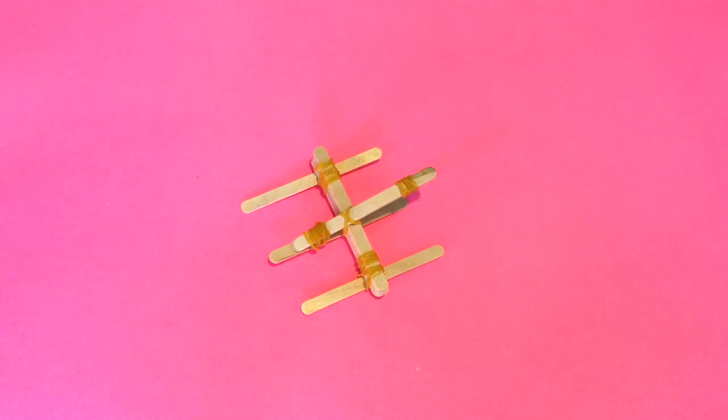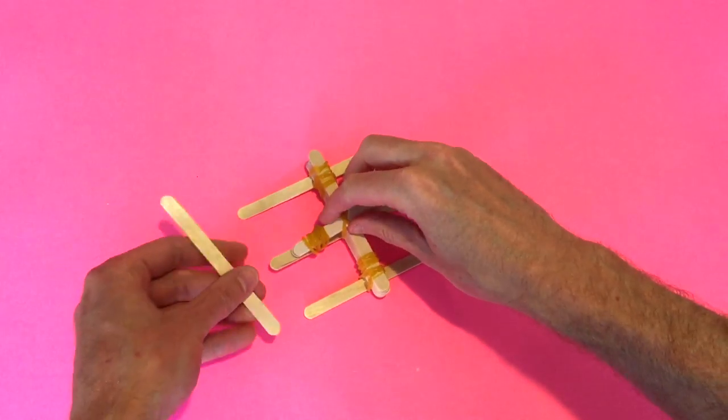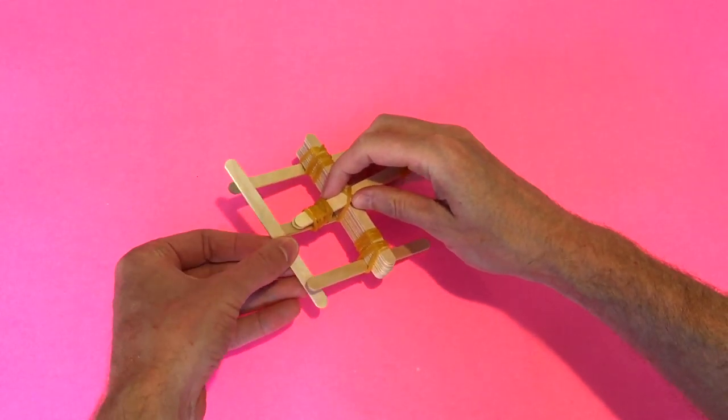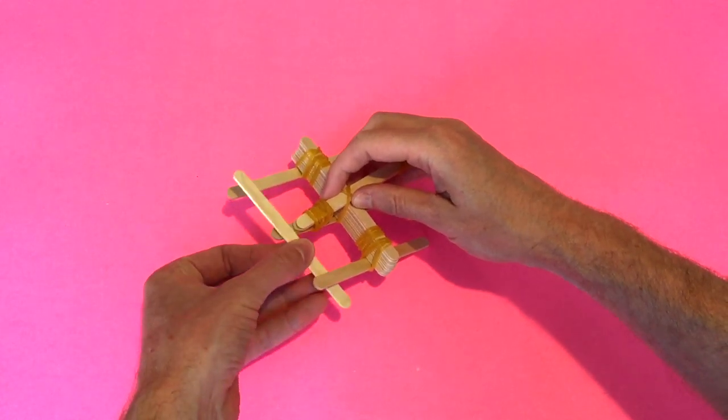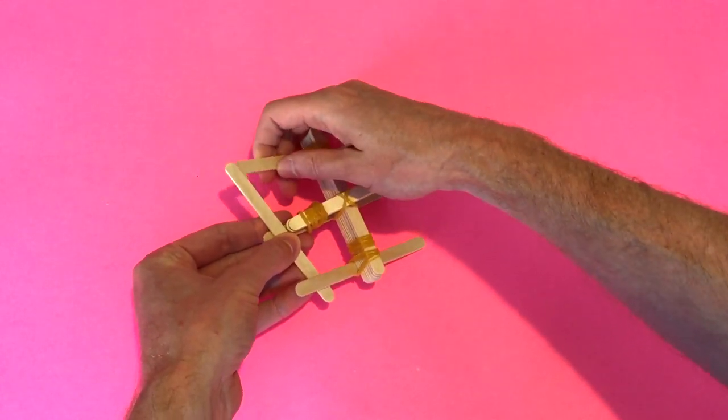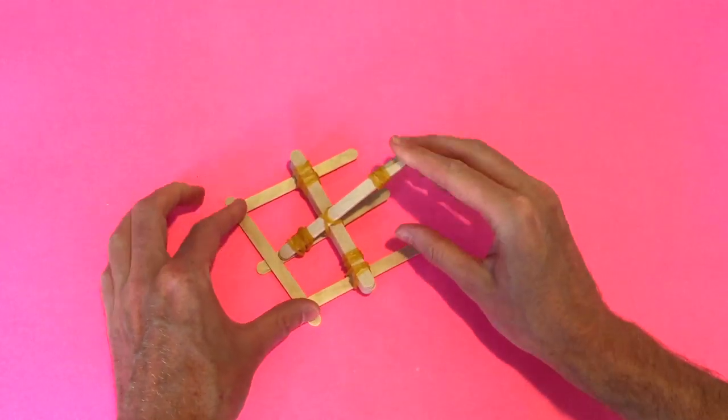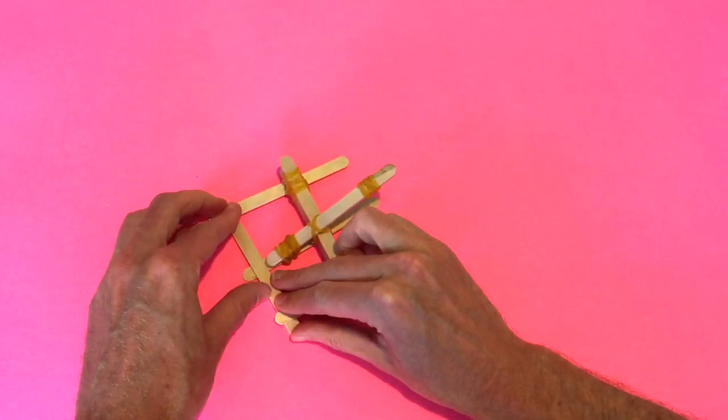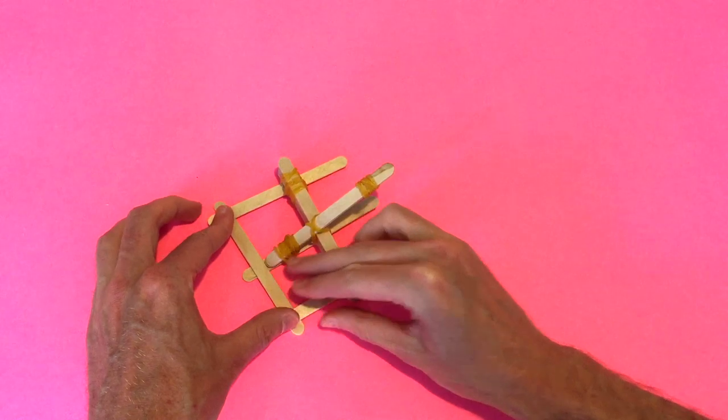Now you can finish at this stage. What I like to do is then put one more popsicle stick at the back. We'll go underneath the sides and on top of the middle one. We're just trying to build some strength into our catapult.